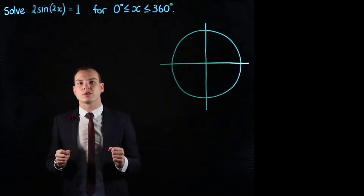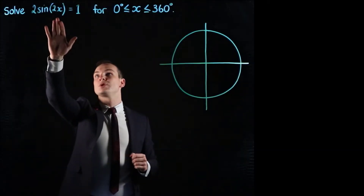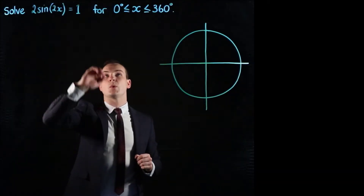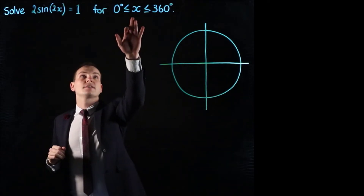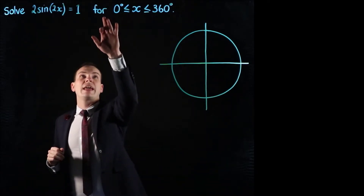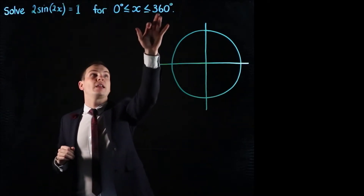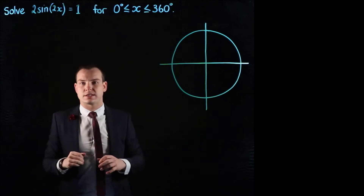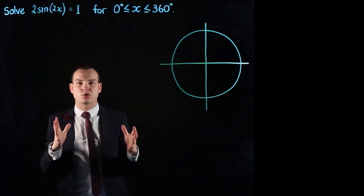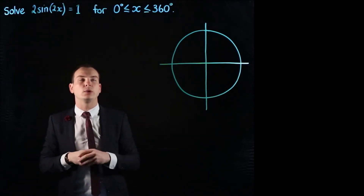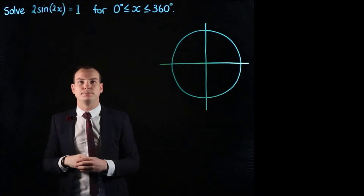In this video we're going to look at solving the equation 2 sine of 2x equals 1, where x is going to go between 0 and 360 degrees. We might call that the domain or the restriction where we're looking for solutions to this problem.